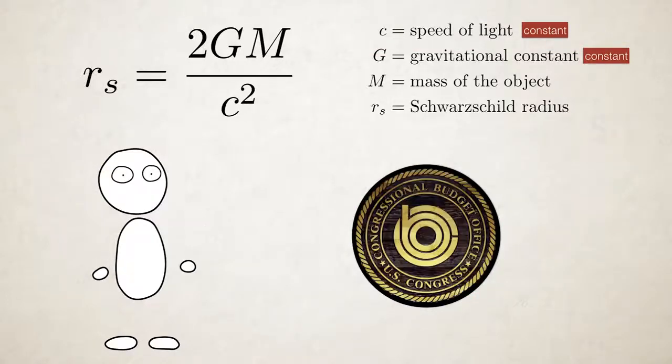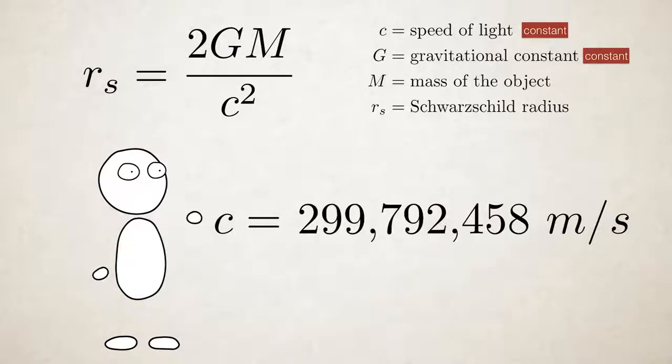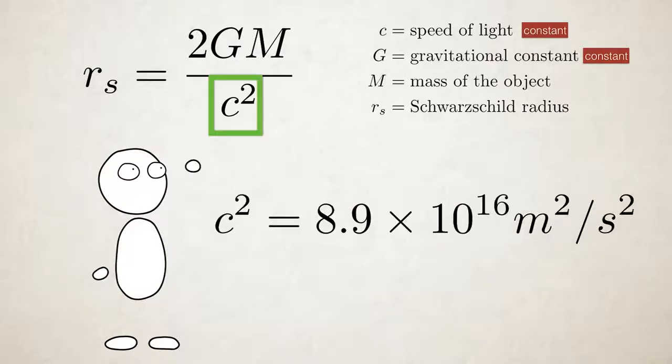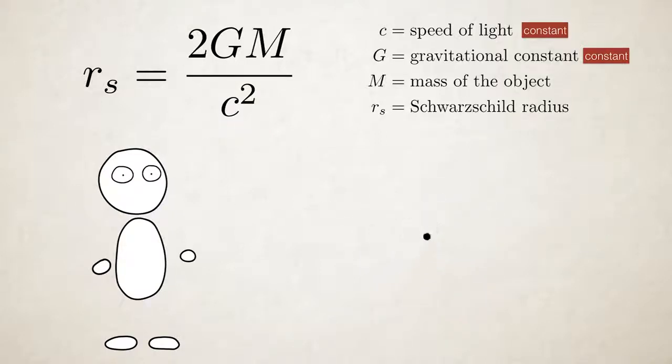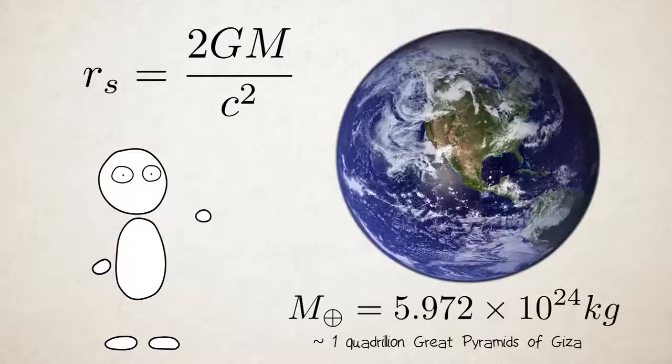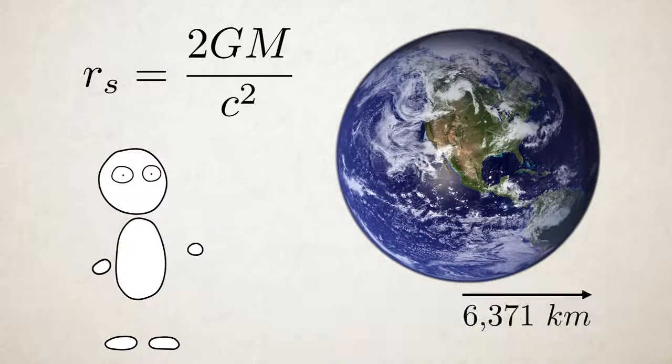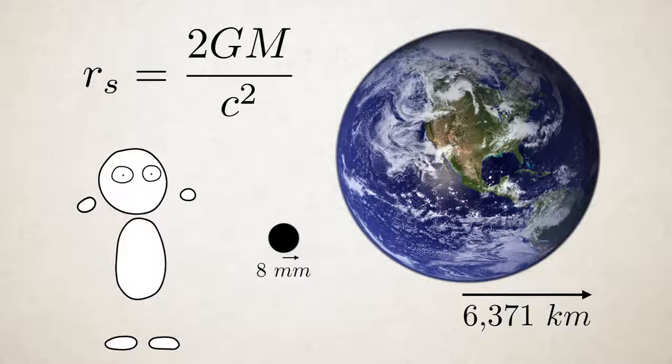It's essentially a black pit where anything you put in doesn't come back. And that's what we call the congressional budget. I mean a black hole. Because the speed of light is such a gargantuan number its square is f***ing ginormous. Which means unless you have an unbelievably big mass the Schwarzschild radius is very tiny. Take the earth which is pretty massive. It has a radius of over 6000 kilometers. Its Schwarzschild radius is only 8 millimeters.